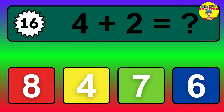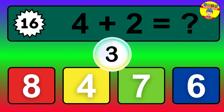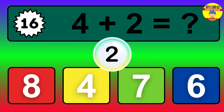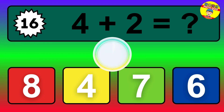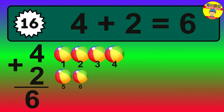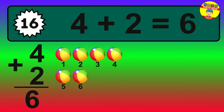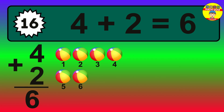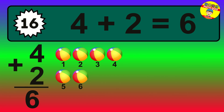Question 16. 4 plus 2 equals what? The answer is 4 plus 2 is 6. Let's count it: 1, 2, 3, 4, 5, 6.